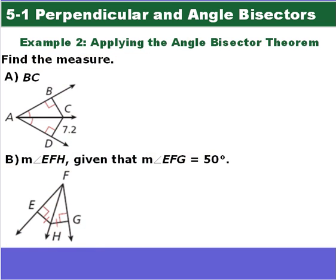Let's work through these problems using the angle bisector theorem and its converse. For part A, we want to find the length of BC. Based on the theorem, these two sides have to be congruent segments. So BC is going to be 7.2, the same as CD. Now we have to find the measure of angle EFH.